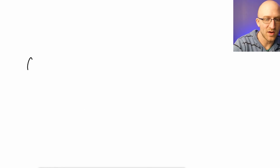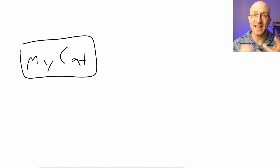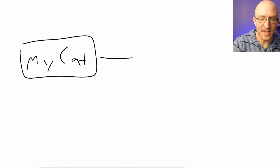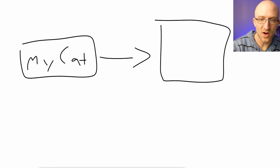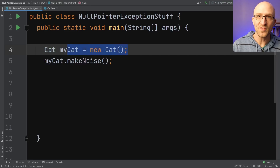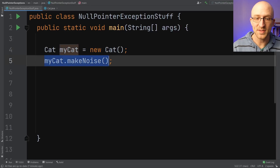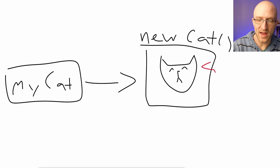To visualize it: what we have in our code is a myCat variable. That myCat variable isn't a cat object itself, but instead it's a reference to a cat object in memory. So when we instantiate our myCat variable to a new cat, that means this myCat variable is now a reference to an actual cat object in memory. So after that, when we call myCat.makeNoise, it has no problem doing that at all. Our myCat variable references an actual cat object in memory, so we're able to tell this cat object to make noise with no problem.